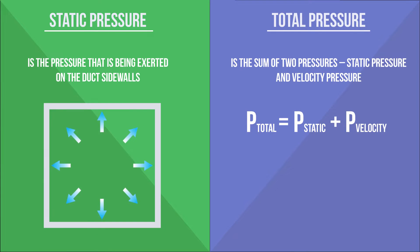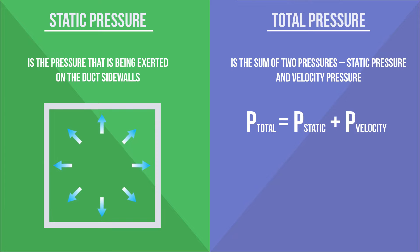There are two main types of pressures that we can measure in this lab: static pressure and total pressure. Static pressure is measured by an instrument moving with the flow, through an opening that is perpendicular to the flow. It is also known as the bursting pressure and is the pressure exerted on the duct sidewalls. Total pressure is the sum of static and velocity pressure, and is measured by placing an opening directly facing the flow.